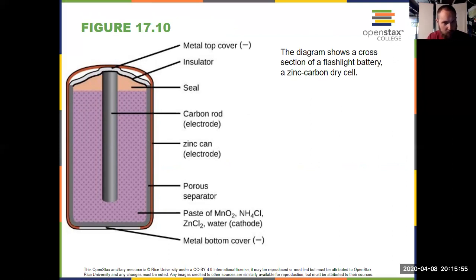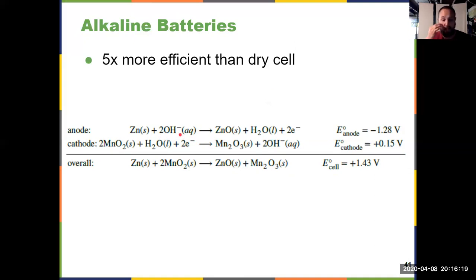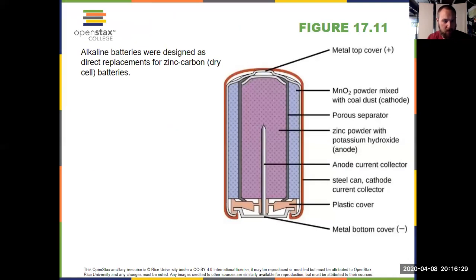What about an alkaline battery? It's much more efficient than the dry cell — about five times more. Zinc and manganese are the primary components. They're more efficient at about the same voltage. The big drawback of alkaline batteries is that potassium hydroxide is used, which can leak, and you don't want a strong base leaking onto your fingers.